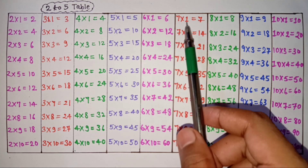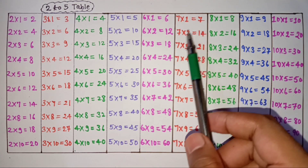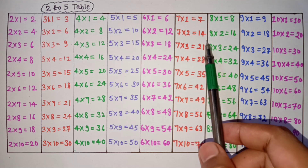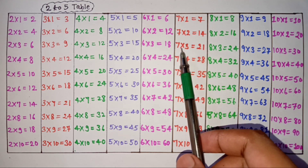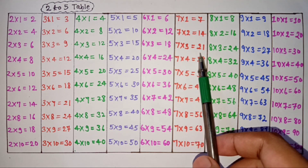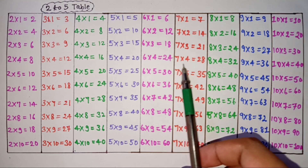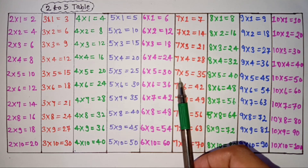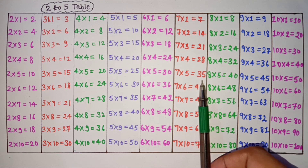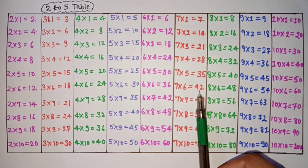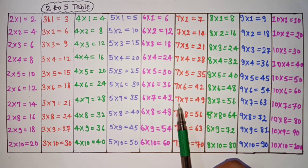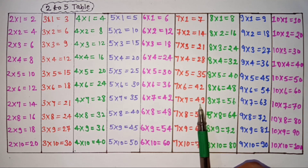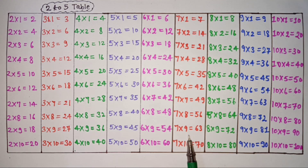Seven ones are 7, seven twos are 14, seven threes are 21, seven fours are 28, seven fives are 35, seven sixes are 42, seven sevens are 49, seven eights are 56, seven nines are 63, seven tens are 70.